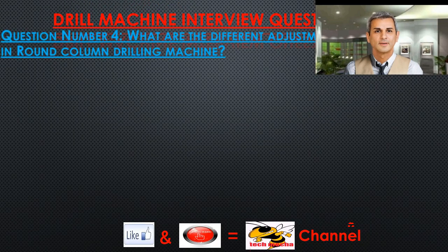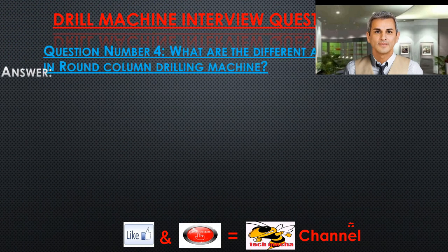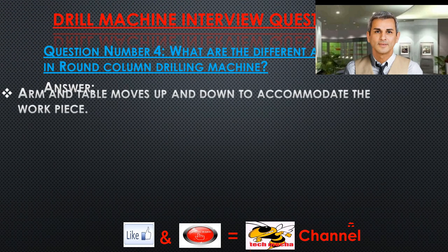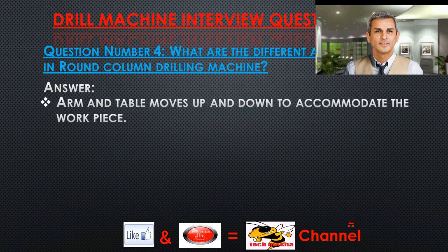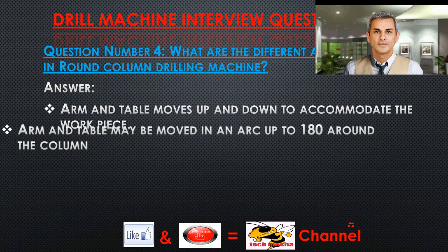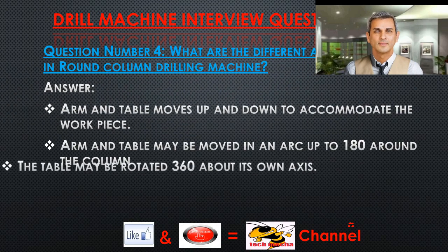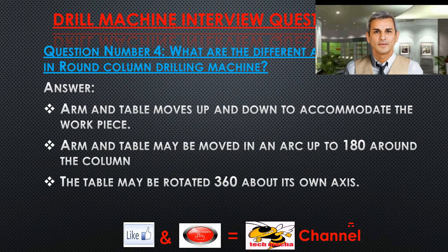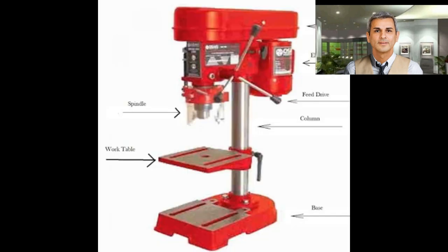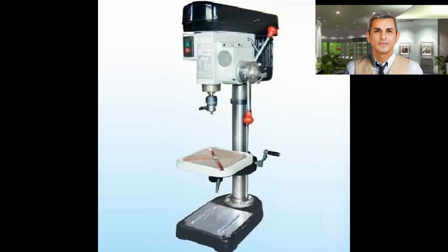Question number four: What are the different adjustments made in a round column drilling machine? Answer: The arm and table move up and down to accommodate the workpiece. The arm and table may be moved in an arc up to 180 degrees around the column. The table may be rotated 360 degrees about its own axis.